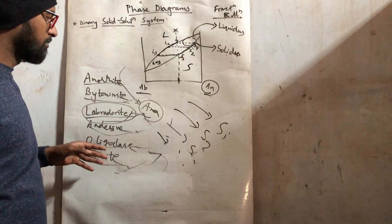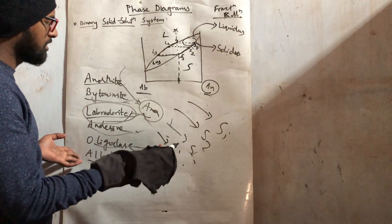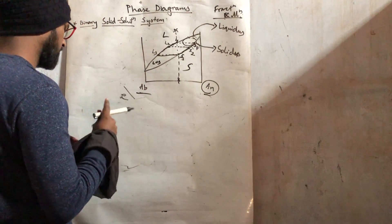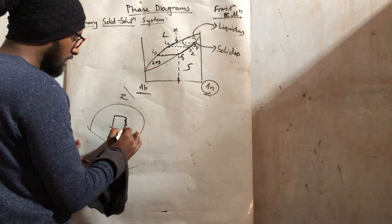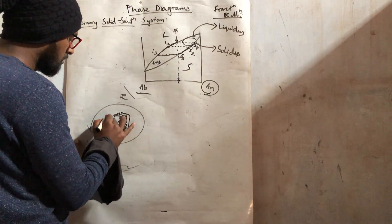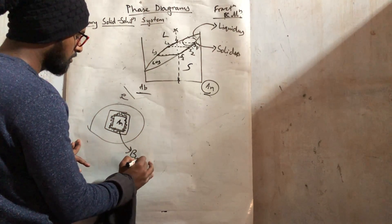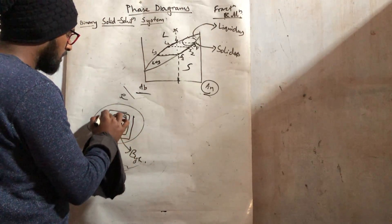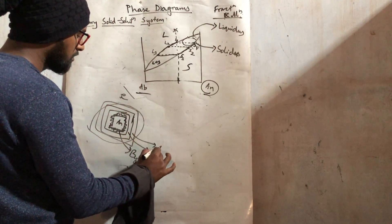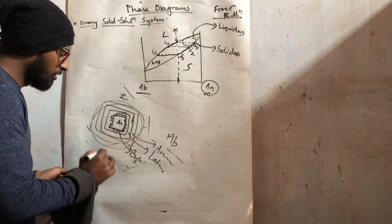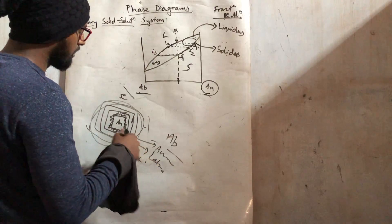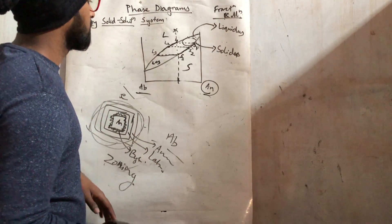In nature, complete fractional or complete equilibrium crystallization doesn't happen practically. When anorthite has crystallized, the anorthite crystal will coexist with the liquid and react. The outer boundary part at lower temperatures will become bytownite, and when temperature is lowered further, this outer part will become labradorite. This is called zoning — when different types of crystals are formed around another crystal due to reaction with the melt.